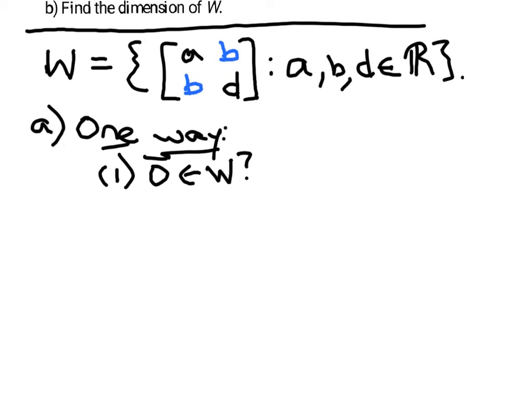And so to do that, we'd want to show that the 0 vector in this case would be the 2 by 2 matrix whose entries are all 0. And that definitely fits the form needed to belong to W. Its entries are mirror images across the main diagonal, so that would be an element of W.